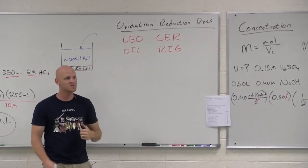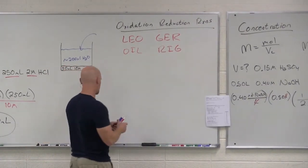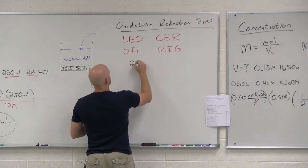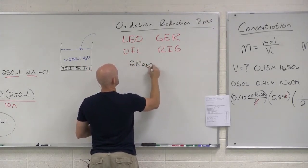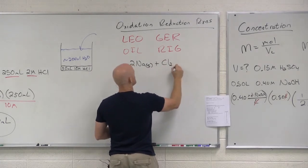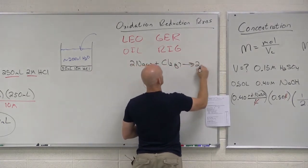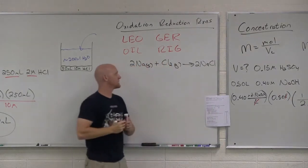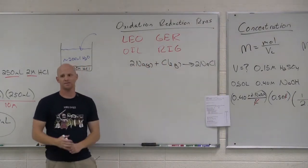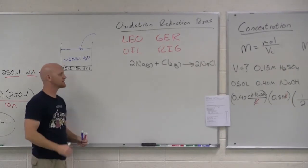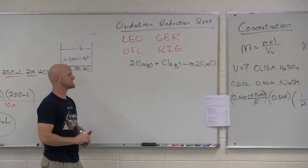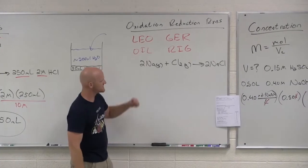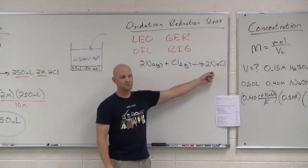If we look at a typical reaction on the handout: two sodium plus Cl₂ gas. If you mix sodium metal with chlorine gas, it gives off a ton of heat — you probably see flames. These reactants form sodium chloride, table salt.